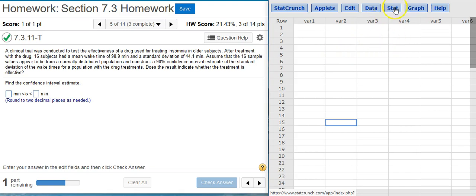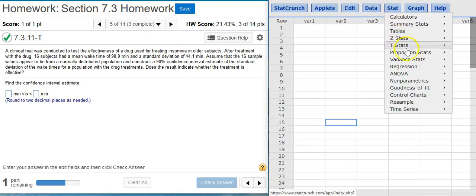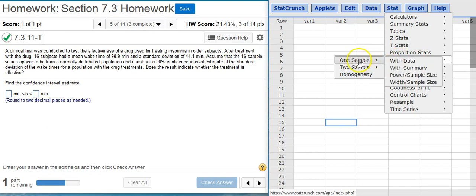To start with, I'm going to come up to Stat, Variance Stats, because we're going through the variance. We've only got one sample, and then I'm going to select With Summary, because we don't have actual data, just summary statistics.